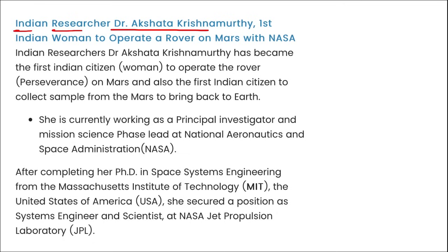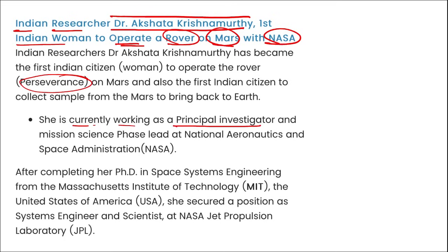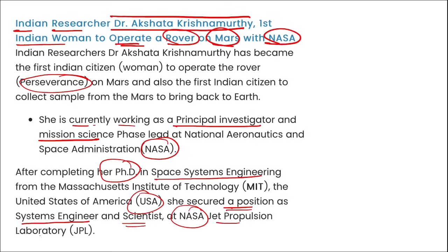Indian researcher Dr. Akshita Krishnamurthy — यह वो पहली Indian women बनी जिन्होंने operate किया एक rover जिसका नाम है Perseverance, NASA का यह rover Mars पर है। तो Mars पर यह पहली Indian women बनी जिन्होंने operate किया a rover with NASA। She is currently working as the principal investigator and mission science phase lead at NASA। इन्होंने अपनी PhD complete की in space systems engineering from MIT, USA। इन्होंने position secured की as systems engineer and scientist at NASA Jet Propulsion Laboratory।